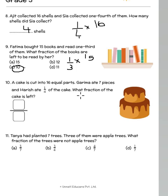A cake is cut into 16 equal parts. Garima ate seven pieces and Harish ate one fourth of the cake. So Garima has eaten seven pieces. We do not know number of pieces eaten by Harish.